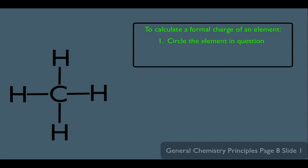Step number one: simply circle the element in question. Let's say we want to calculate the formal charge of carbon in this molecule — mentally we circle it. When you're circling it, think about this: each bond in this molecule has two electrons. Your circle is cutting between the two electrons in each bond.